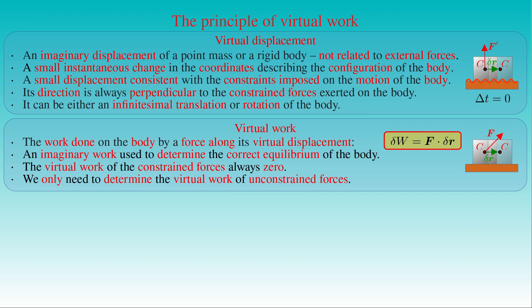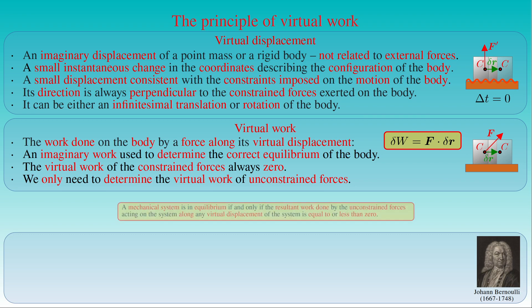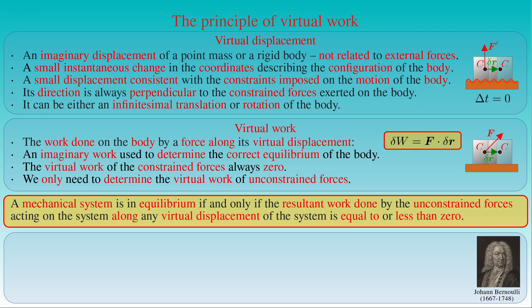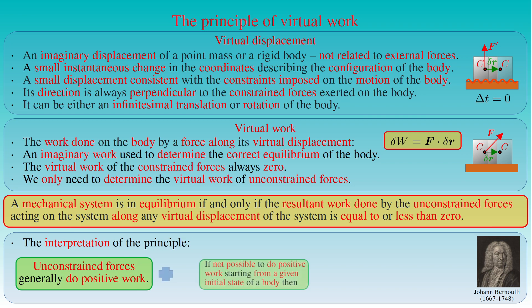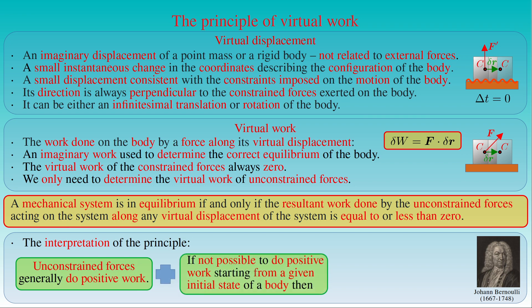After clarifying the concept of virtual work, we can draw a general conclusion from these two examples. This condition is known as the principle of virtual work, formulated by Johannes Bernoulli in 1717. The principle states that a mechanical system is in equilibrium if and only if the resultant work done by the unconstrained forces along any virtual displacement of the system is equal to or less than zero. This principle is one of the most insightful findings in mechanics, leading to the discovery of the law of conservation of energy. It can be interpreted as: unconstrained forces generally do positive work, and if no positive work is possible from a given state, the body or system stays at rest.